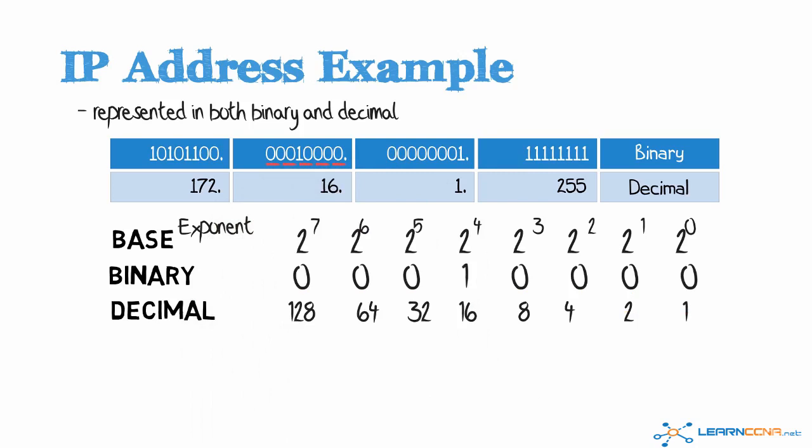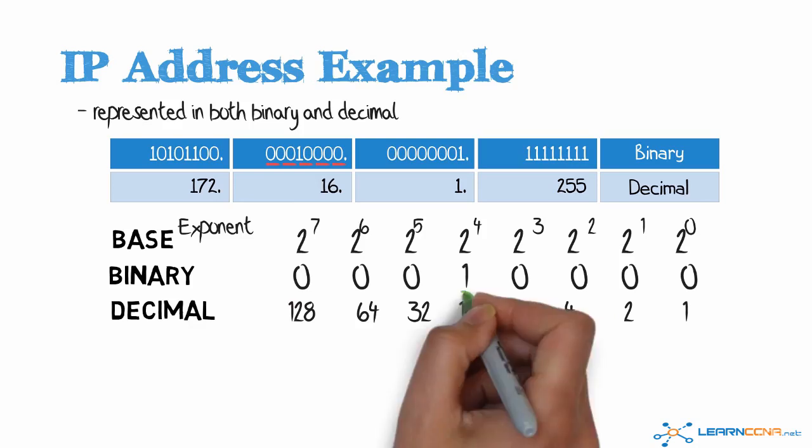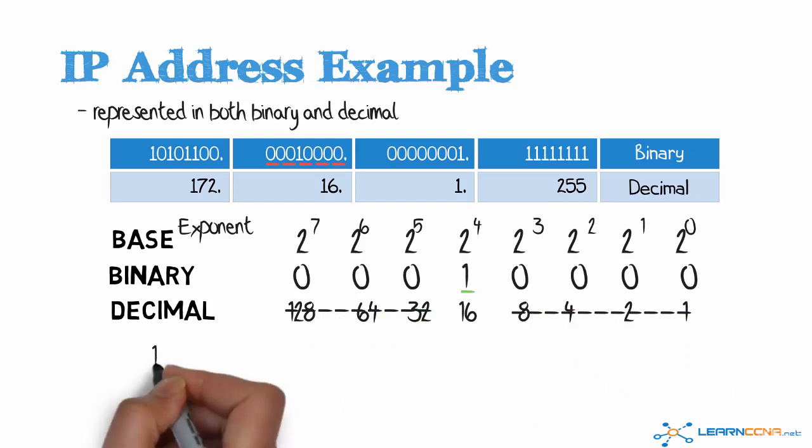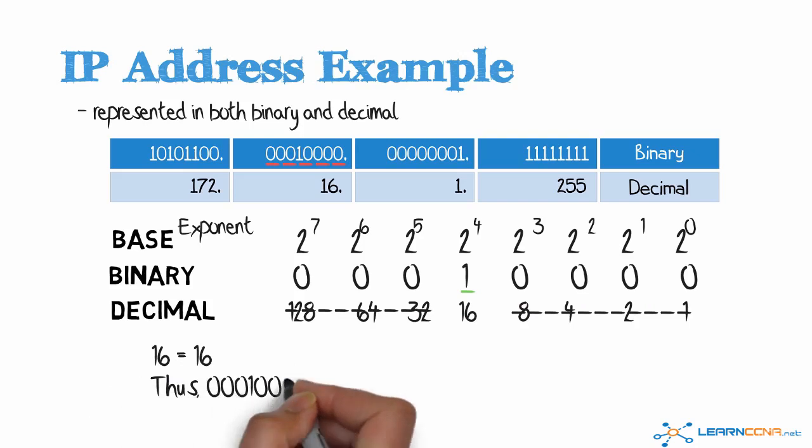So in our table, the fourth bit is set on and all the other bits are set off. This is the equivalent of 16. So 00010000 in binary is equivalent to 16 in decimal.